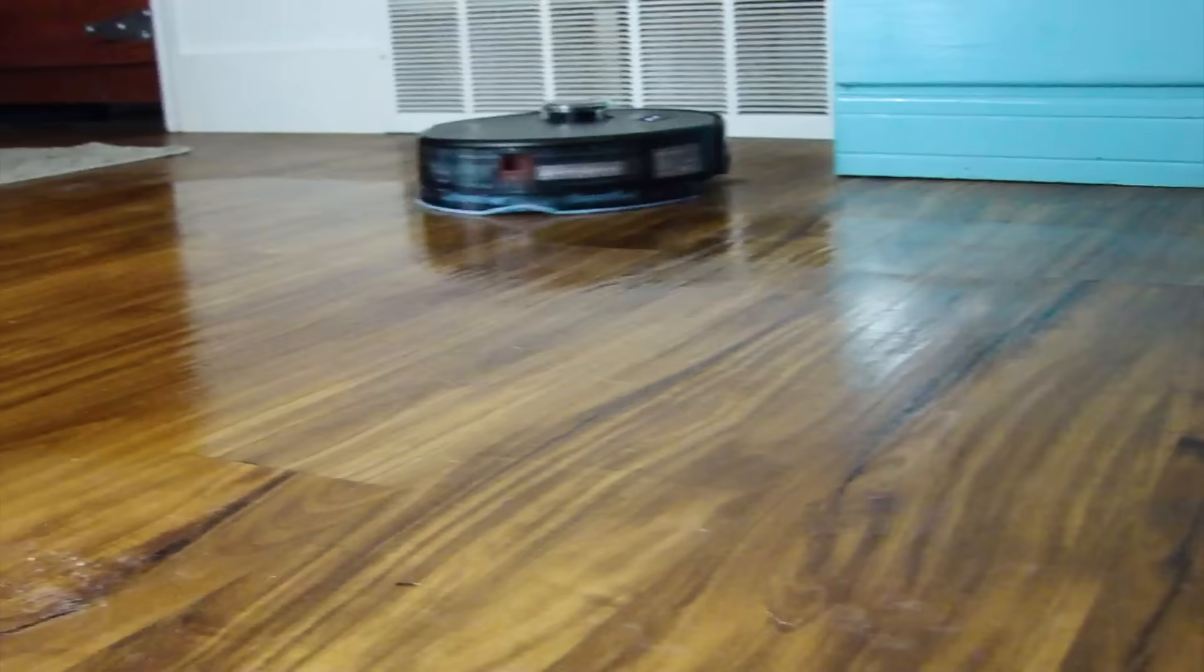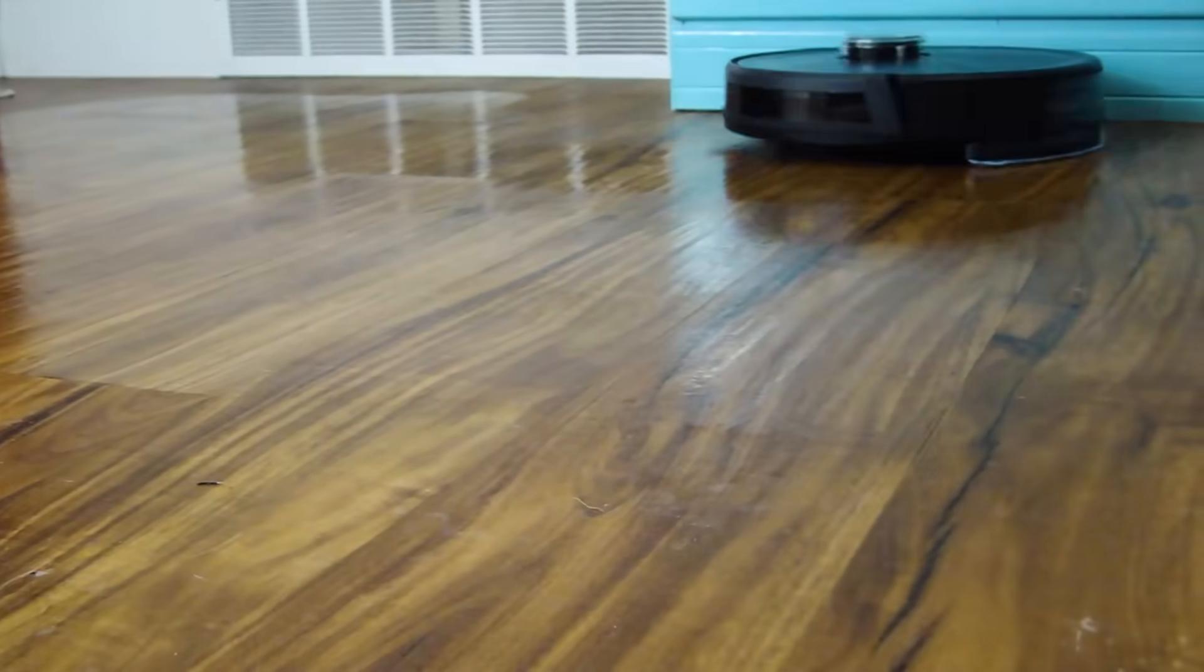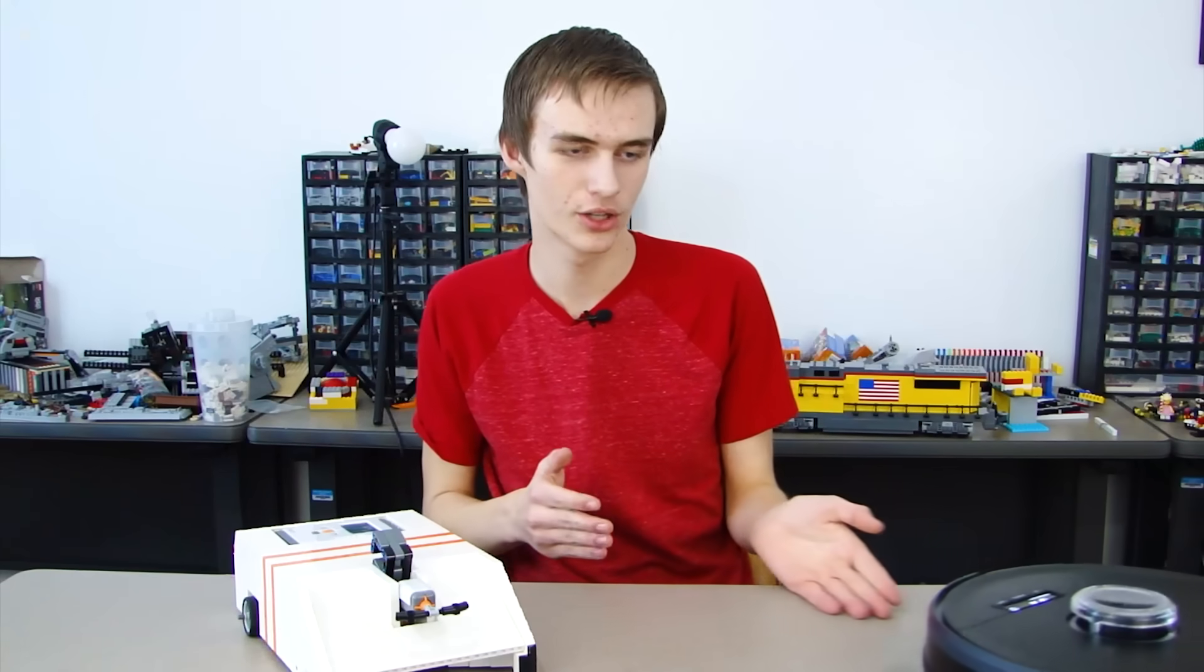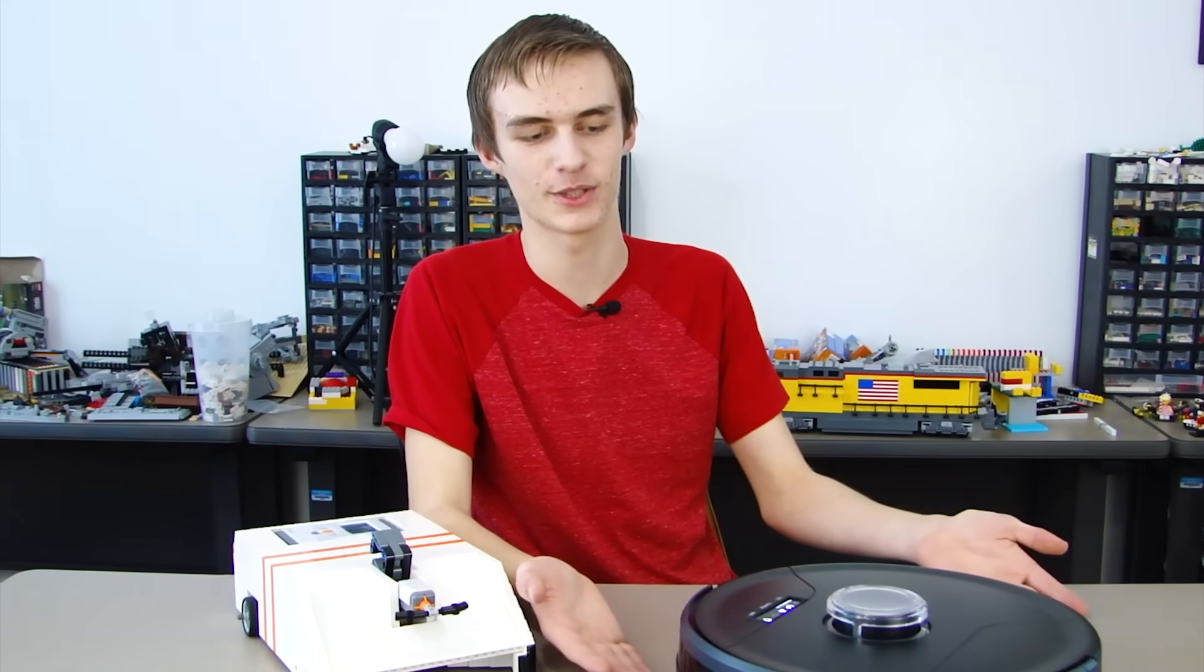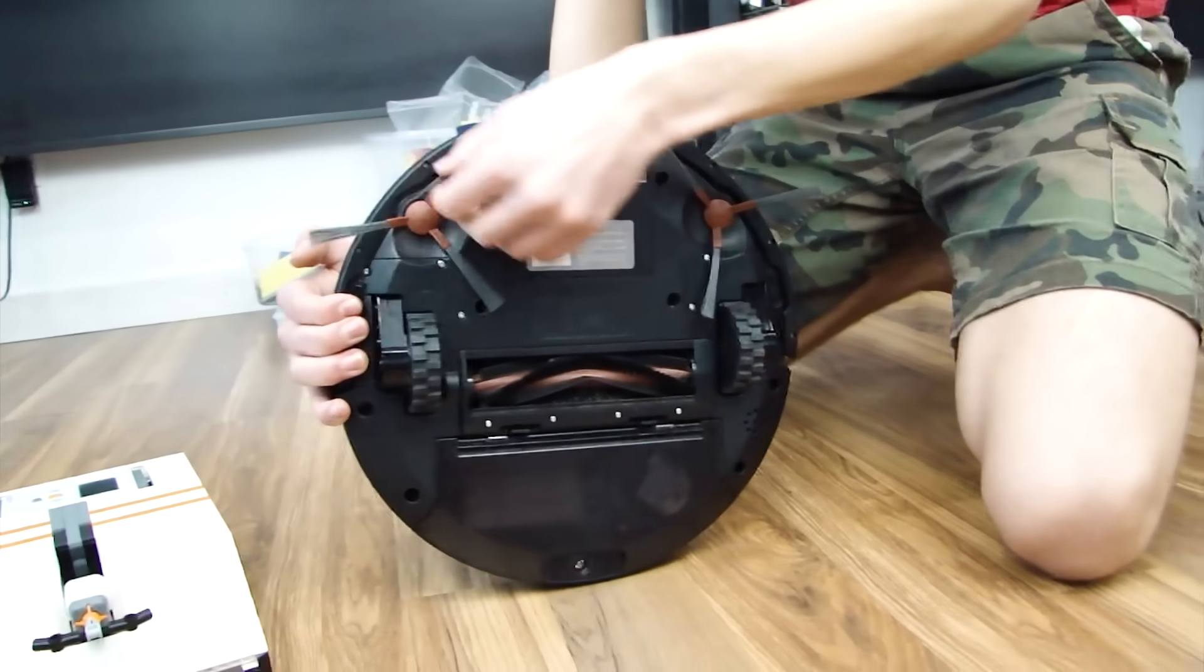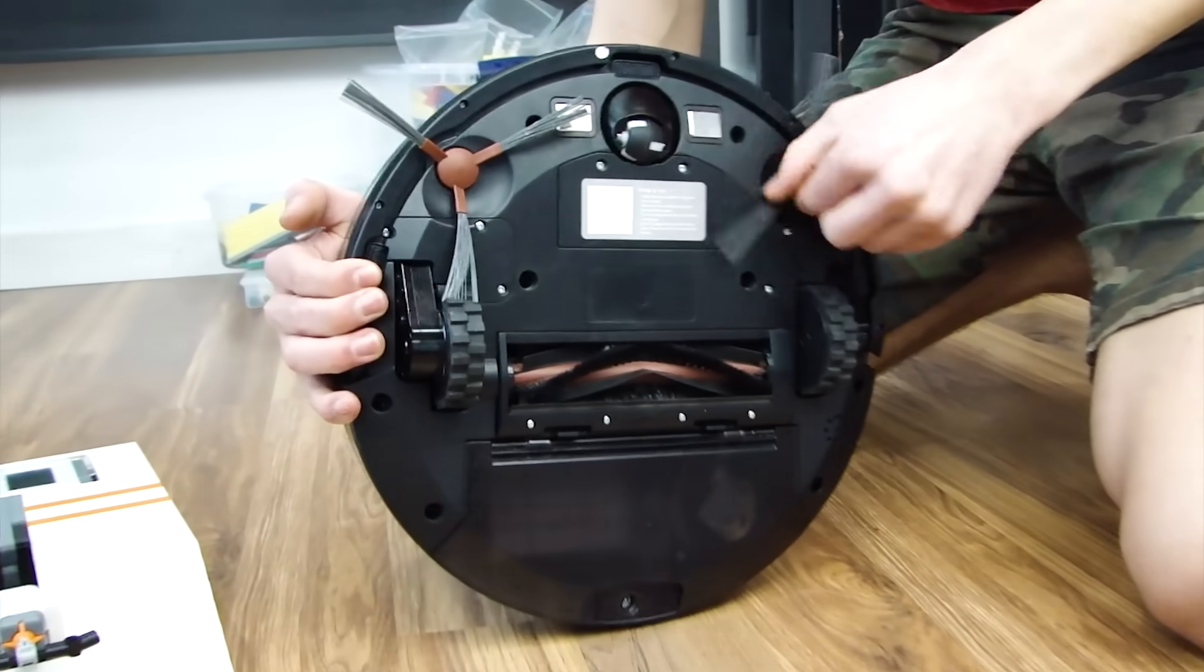It vacuums and it mops and it mop and vacuum at the same time. It's really cool and it works with Google Assistant and Alexa. Look who it is. Wants to meet you guys. He's sensing all the edges of the table. Let's see if the Lego one can keep up.